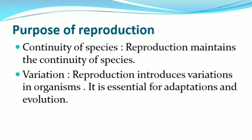Reproduction also introduces variations in organisms. This variation arises during crossing over and recombination in meiotic cell division. This variation is very essential for the animal to adjust in the changed environment. The adjustment of an organism in the changed environment is called adaptation. The adapted organisms are then selected by nature — that is called evolution.